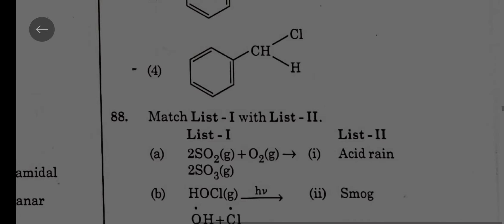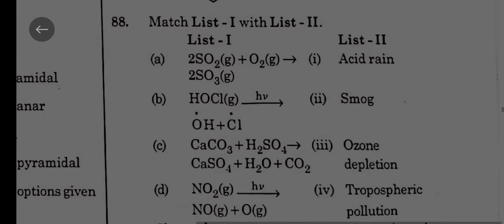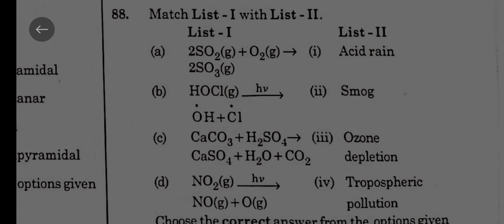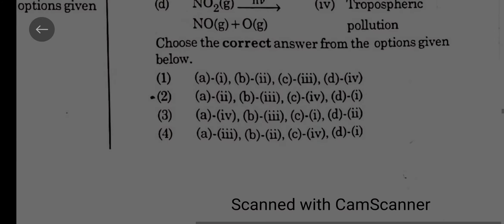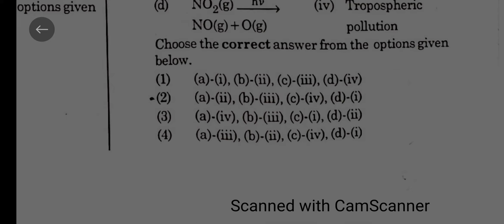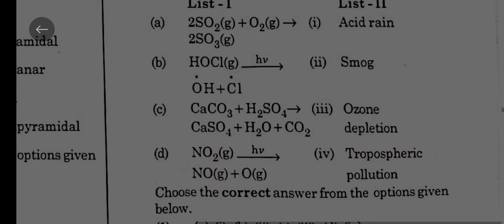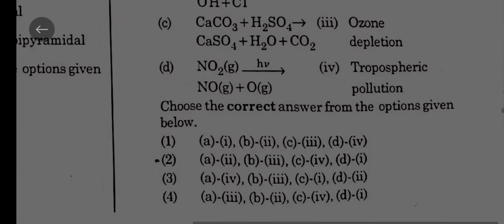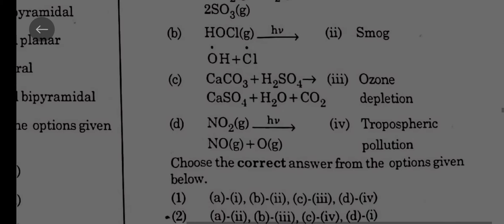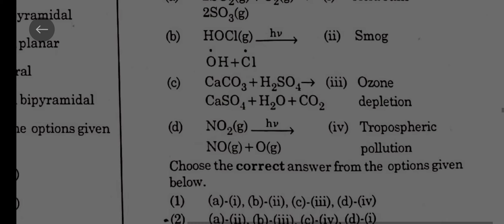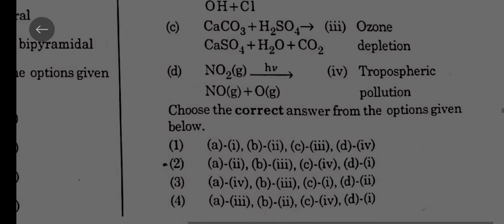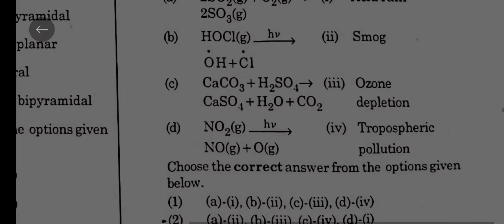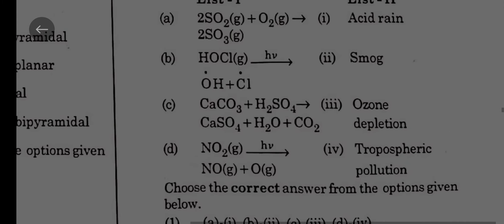Match list 1 with list 2. Here, C you can see, CaCO3 plus H2SO4 is acid rain. From this you can easily say the remaining. Now C must be 1, C-1 option is only given third. A4: SO2 plus O2 gives SO3, tropospheric pollution. B3: HOCl giving you free radicals, they can deplete ozone. Then D2: NO2 is giving you NO and O, and NO and O will be forming smog.